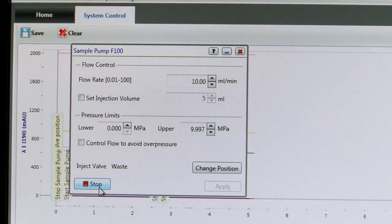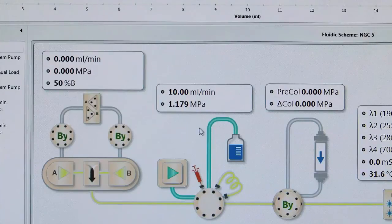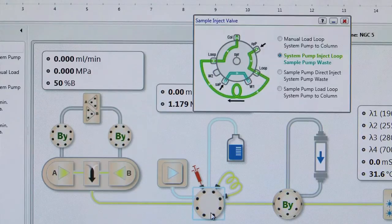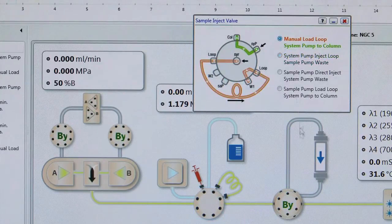After one minute, click Stop and then select Manual Load Loop on the Inject Valve faceplate. Close the faceplates. The system is now purged and ready for manual control.